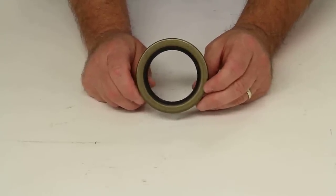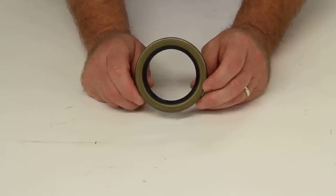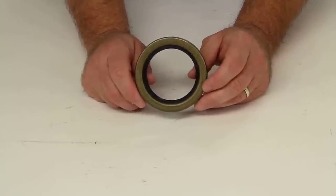Now if you no longer have that wear sleeve or it is damaged, then you can actually use a 10-36 oil seal as a replacement.